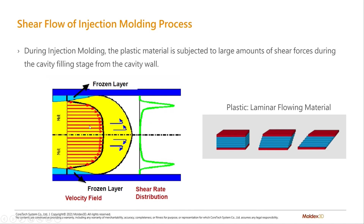The material at the center of our flow path — the center of our runner — is moving very, very fast, rapidly filling the mold. So what we have is a transition zone where we've got zero velocity up to a very fast velocity. That difference in velocity causes a shear rate — a difference in velocity is shear.